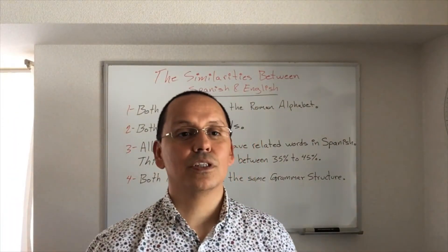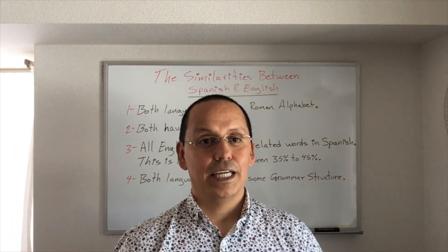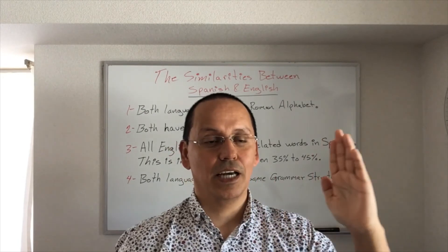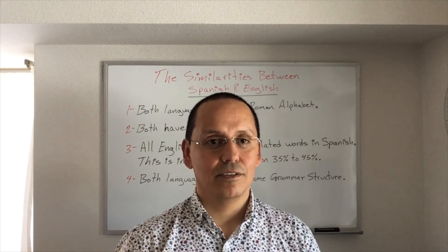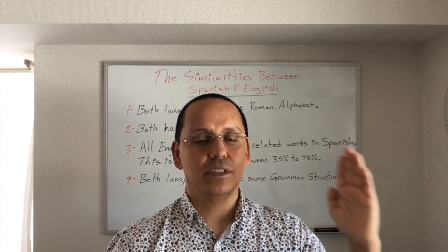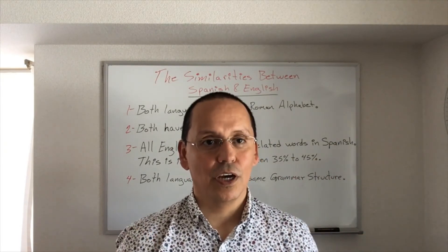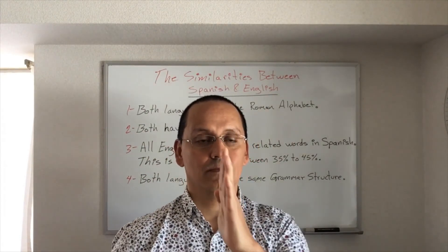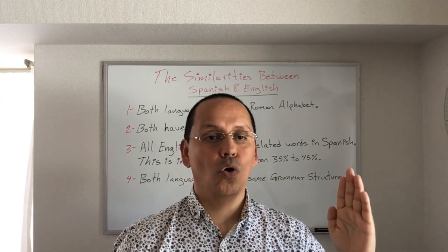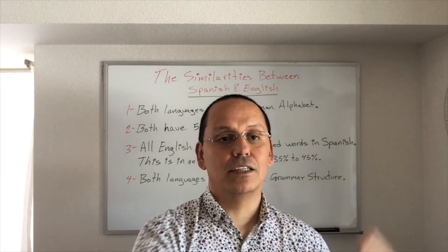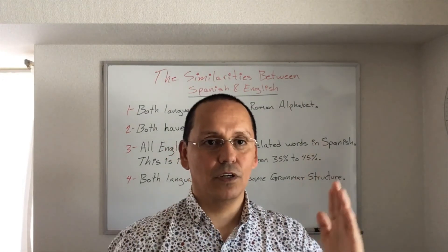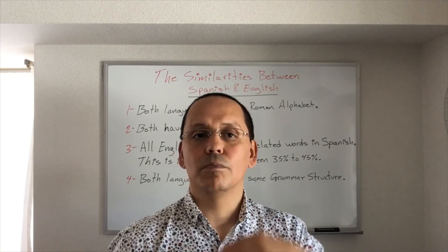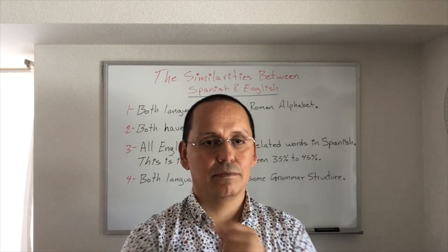And the last point: both languages use the same grammar structure — subject at the beginning of a sentence, verb in the middle, and object at the end. Spanish and English use that same system. On the other hand, in Japanese they mostly use subject, object, verb — the verb comes at the end. In some situations they use subject, verb, object, but most of the time it's the opposite way.